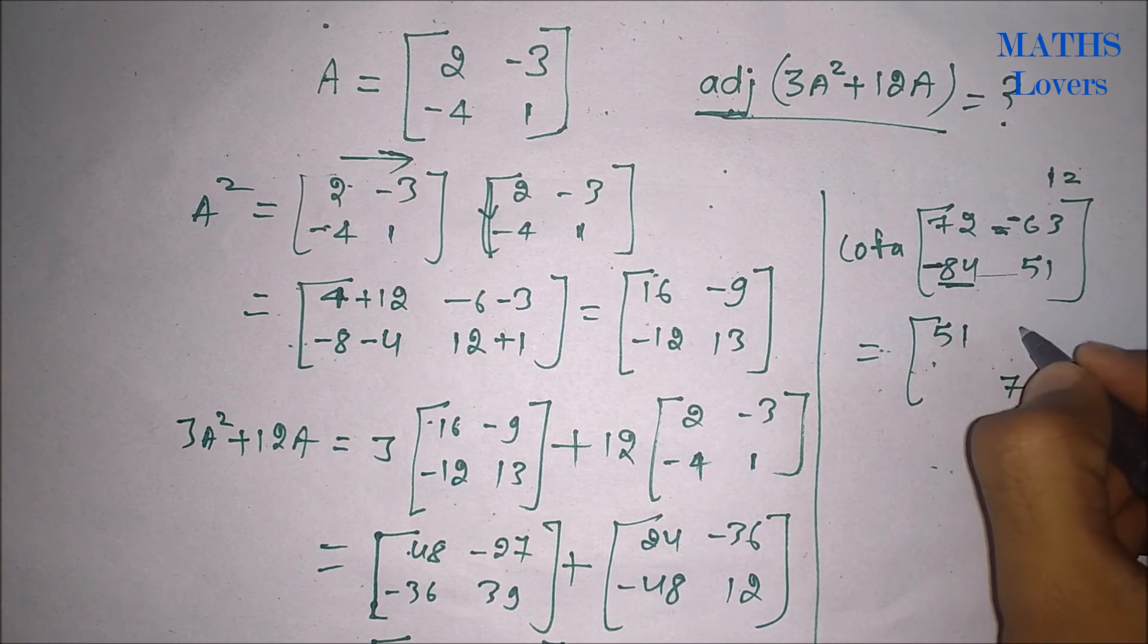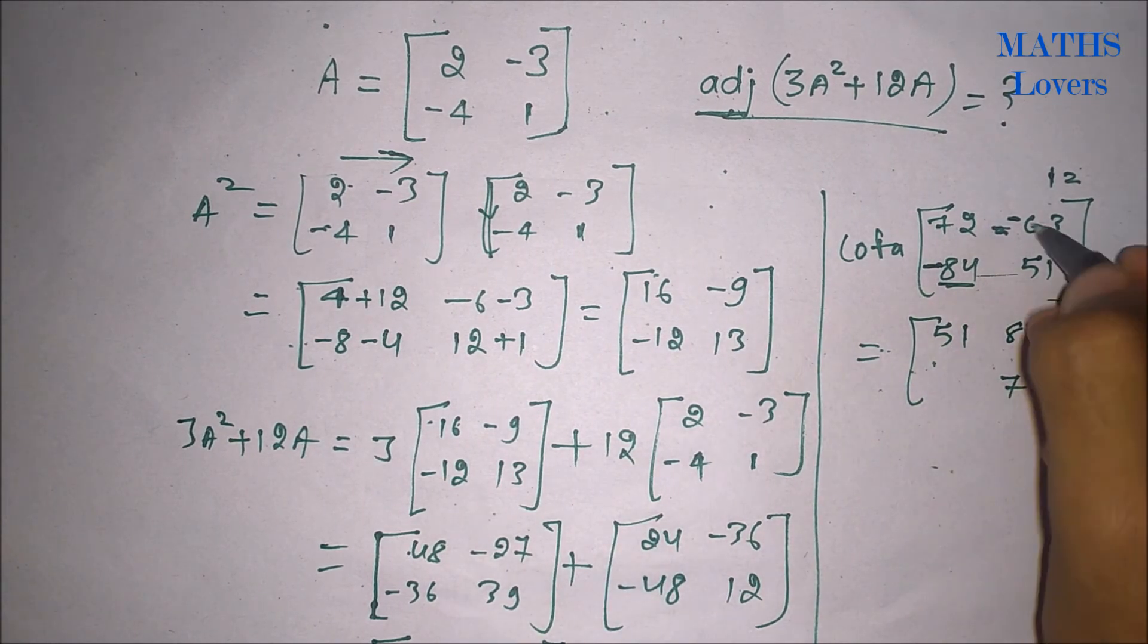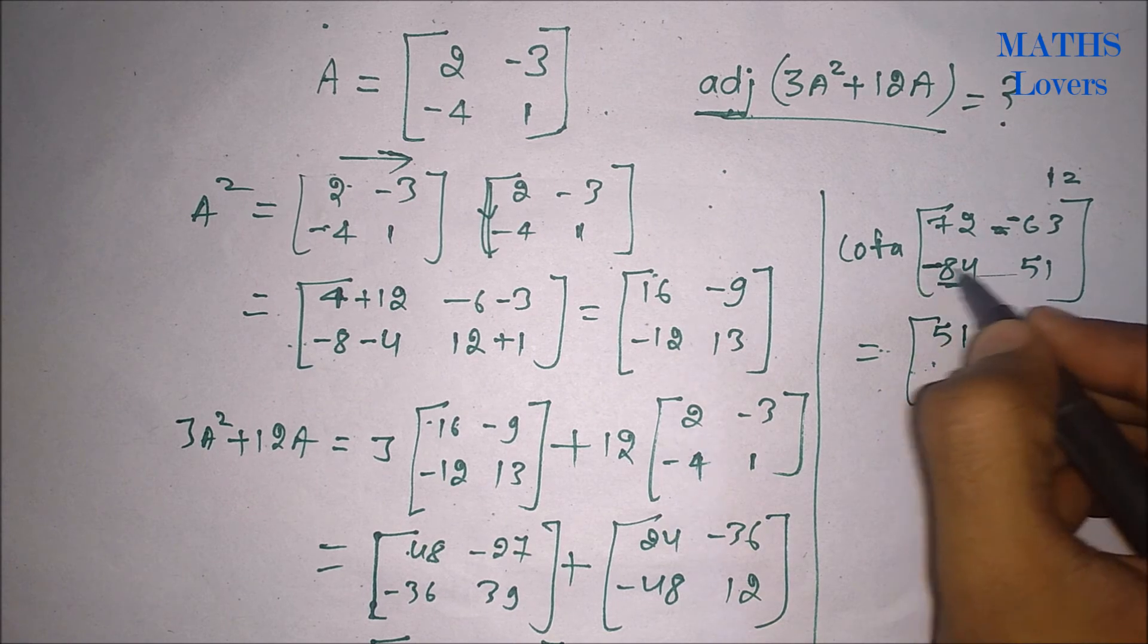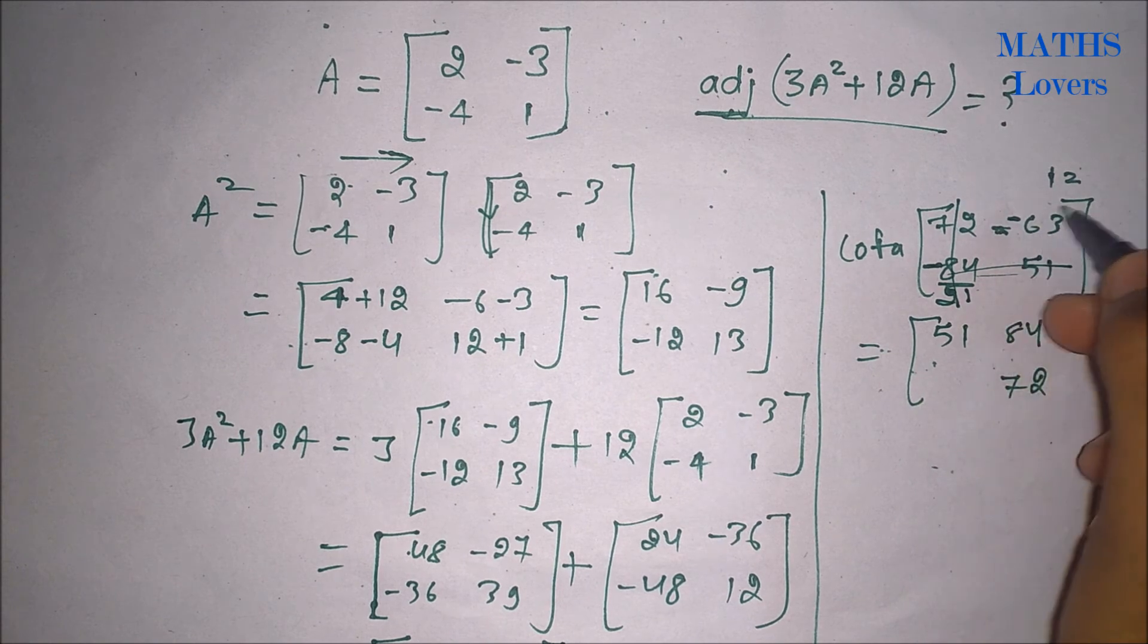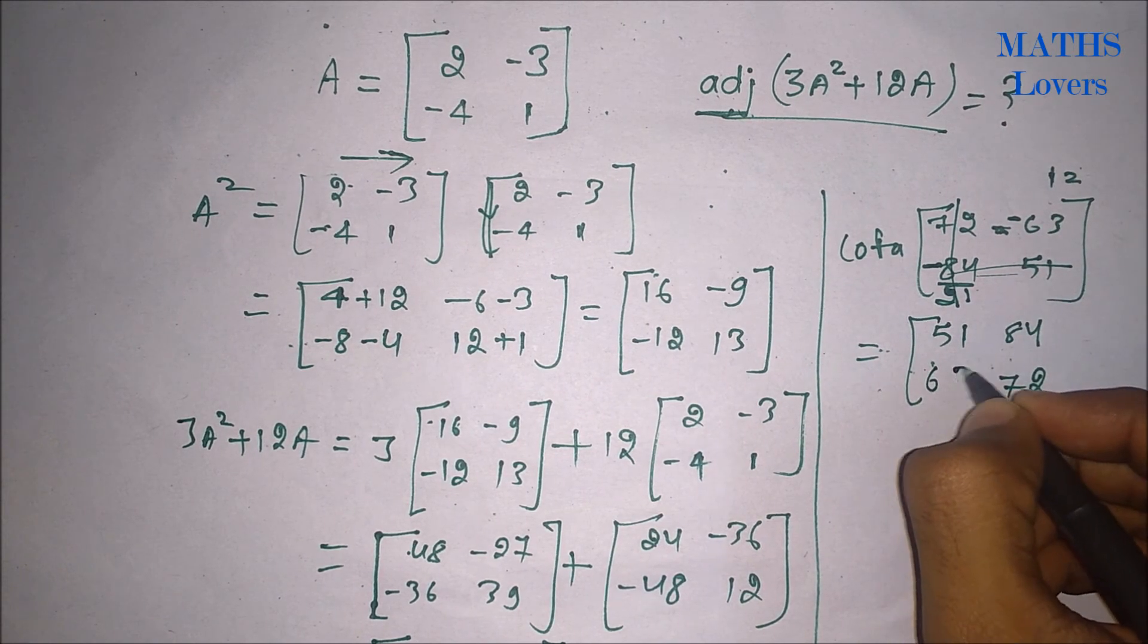So we will take it with negative sign that it will be 84, and cofactor of minus 84 will be minus 63. But it is at position 2,1 so it will be negative, so here 63.